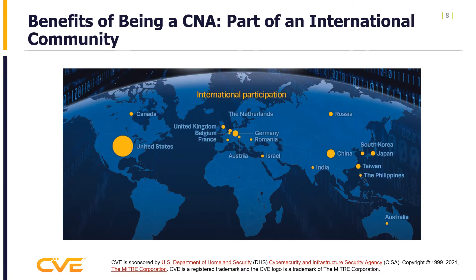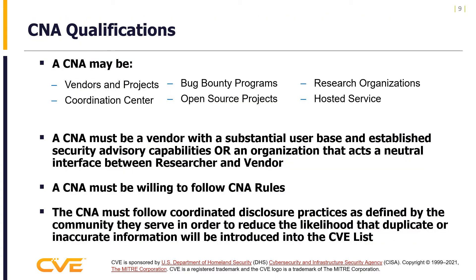As a CNA, you are part of an international community. There are many types of CNAs: vendors and projects, coordination centers such as national and industry CERTs, bug bounty programs, open source projects, research organizations, and hosted services. A CNA must be a vendor with a substantial user base and established security advisory capabilities, or an organization that acts as a neutral interface between researcher and vendor, must be willing to follow the CNA rules, and must be able to follow the coordinated disclosure practices as defined by the community they serve.